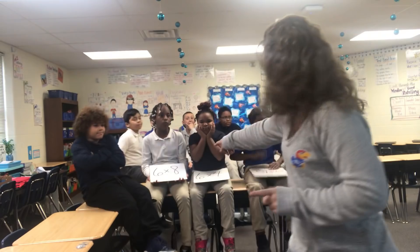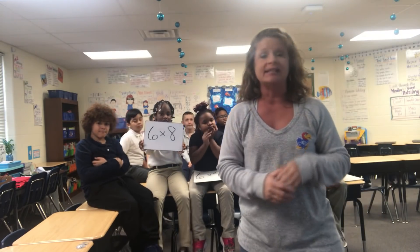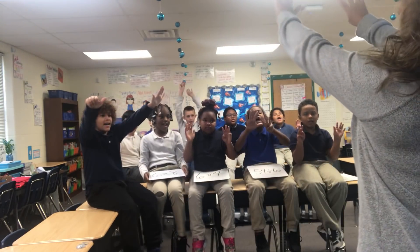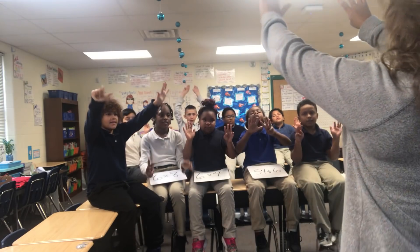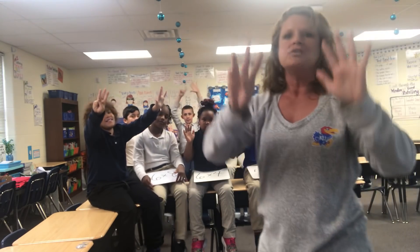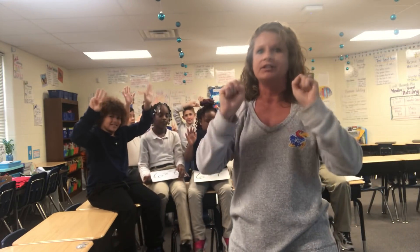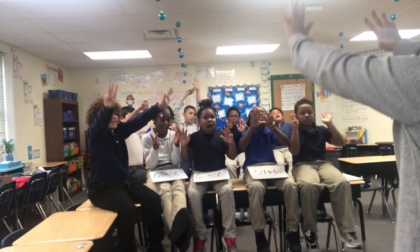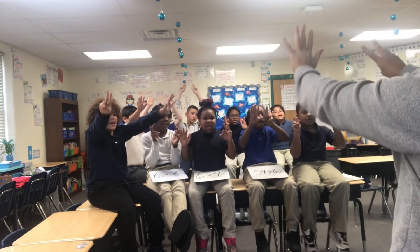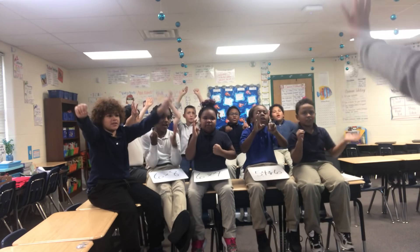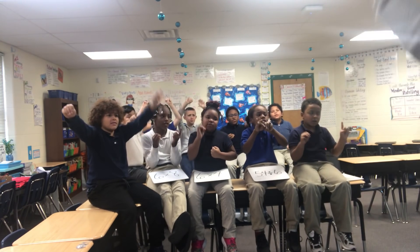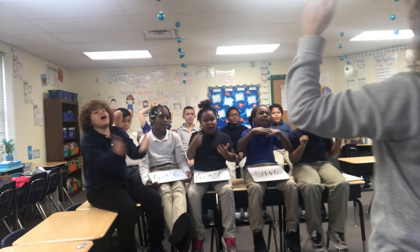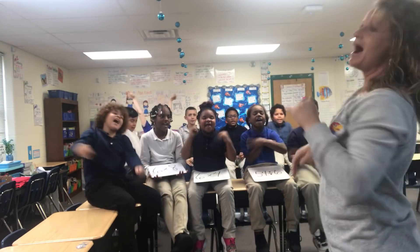So our first math problem is six times eight. Since we're counting by sixes, you hold up eight fingers and count by six, putting down one finger at a time until you're out of fingers. Are you ready? Yes! Go! Six, 12, 18, 24, 30, 36, 42, 48. What is six times eight? 48. Awesome job.